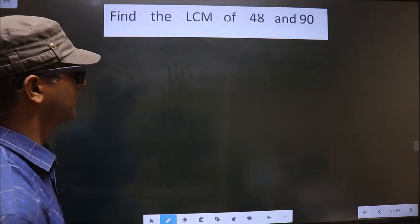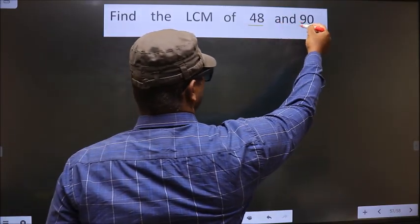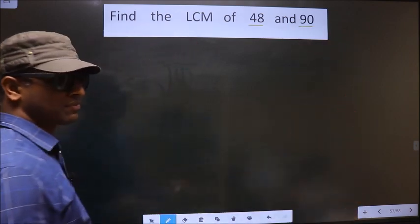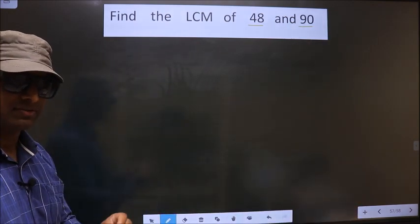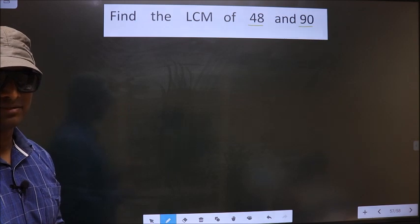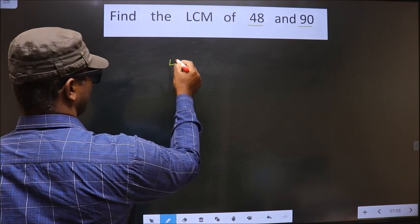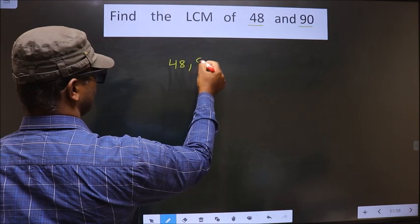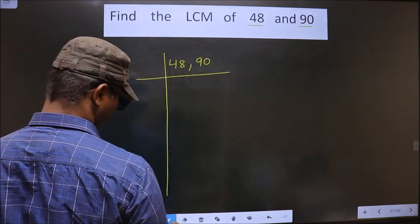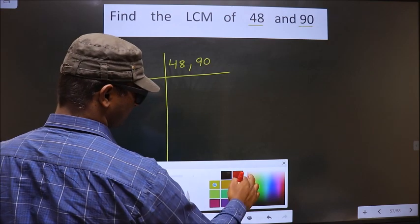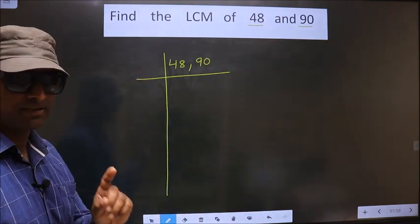Find the LCM of 48 and 90. To find the LCM, first we should frame it in this way. We write 48 and 90. This is your step 1.